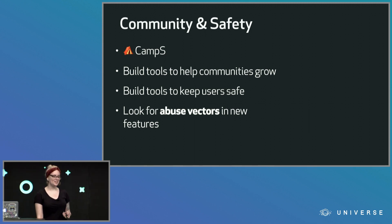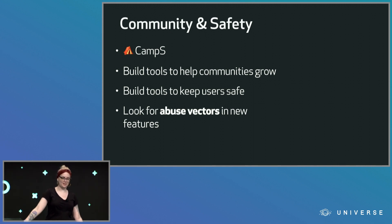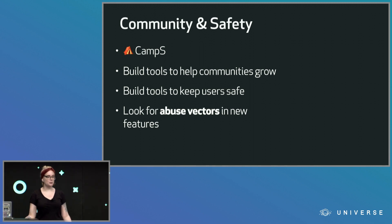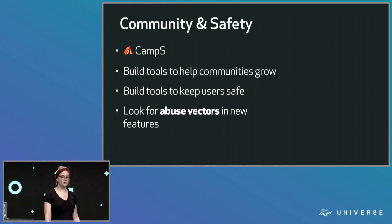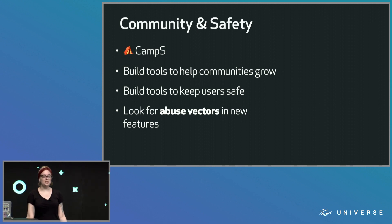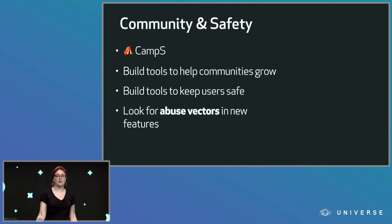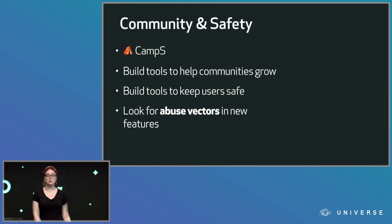I'm on the community and safety team, which I constantly say is the best team at GitHub — I absolutely love our team. It's CAMPS for short, coined by Danielle, who you might have heard speak earlier. We build tools to help communities grow, tools to keep users safe, and we also look for abuse vectors in features, which is extremely important.